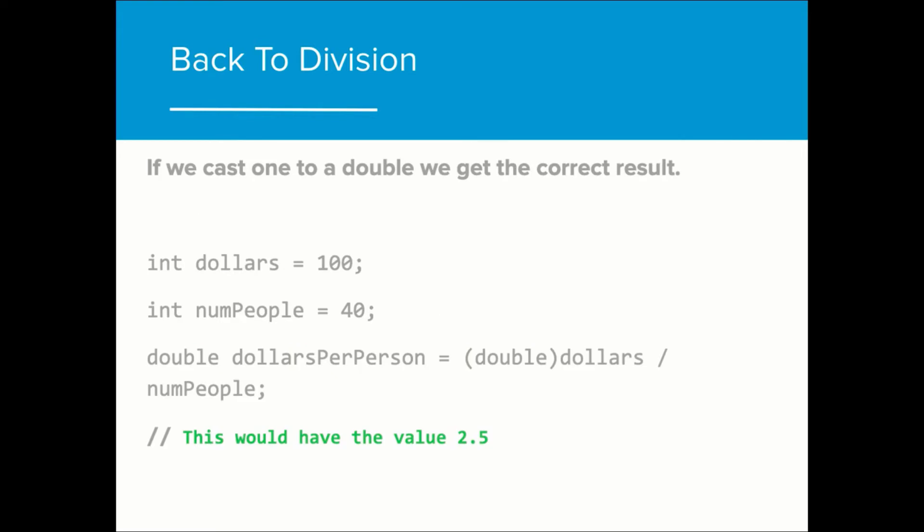If we cast one of the variables, dollars or num people, as a double, the value of dollars per person will be correctly evaluated. In this case, dollars will be transformed to 100.0, which, when divided by 40, will equate to 2.5.